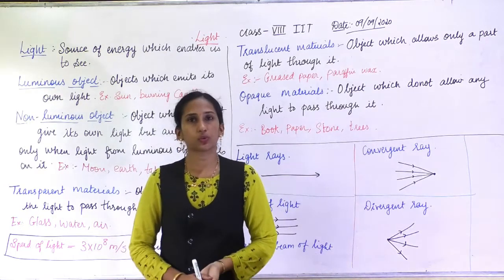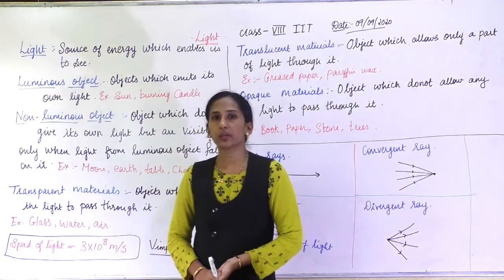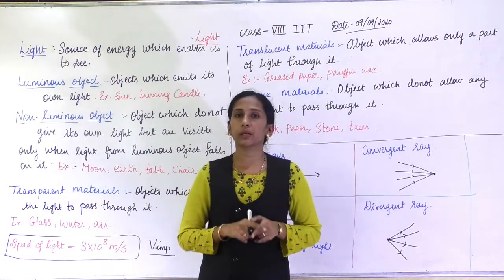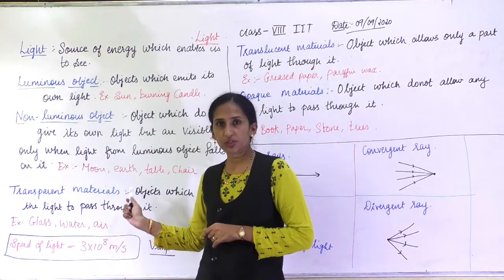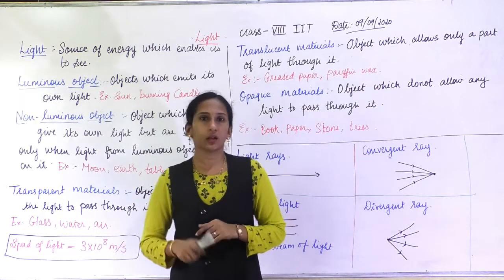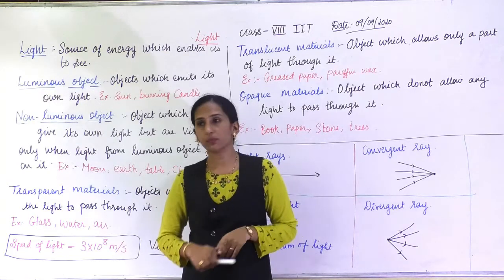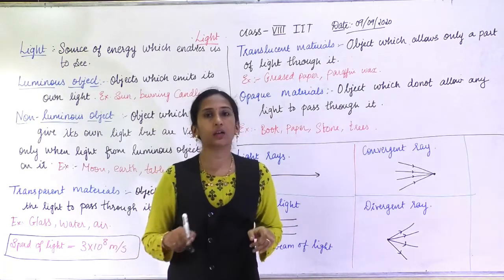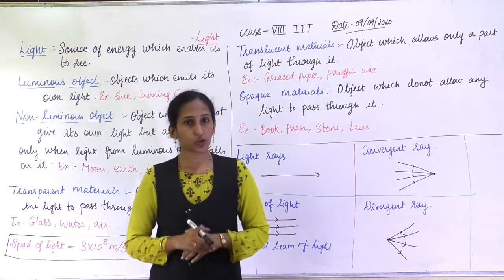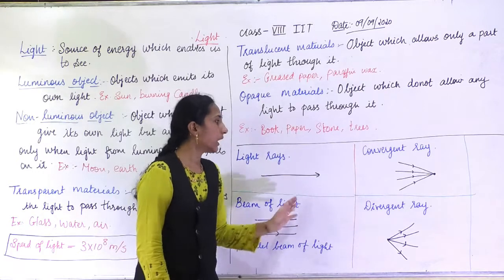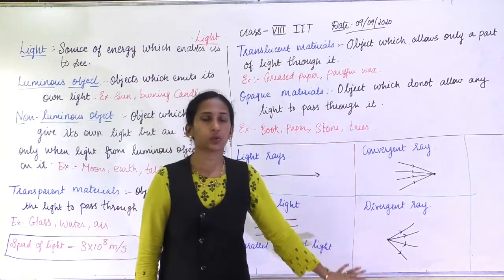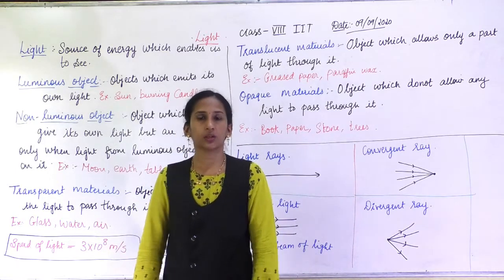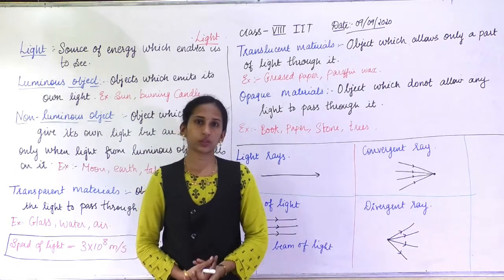Your work for today: watch this video and write the definition of light. Draw a table with two columns for luminous and non-luminous objects. Then prepare a comparison table for the three types of materials — transparent, translucent, and opaque. Also draw the diagrams of the rays of light and send your completed work to me by the end of the period.